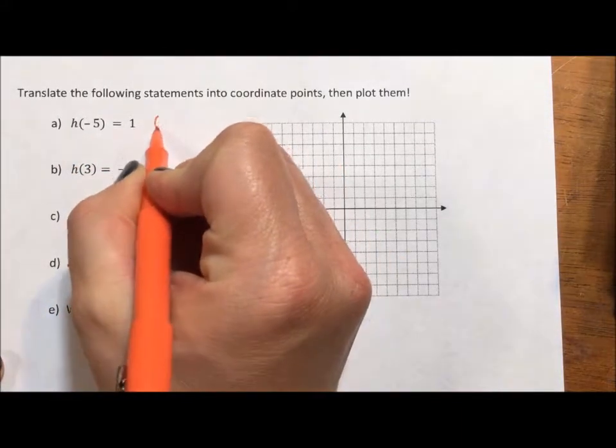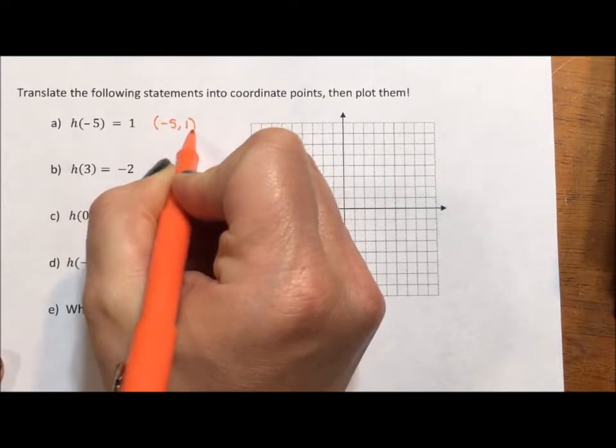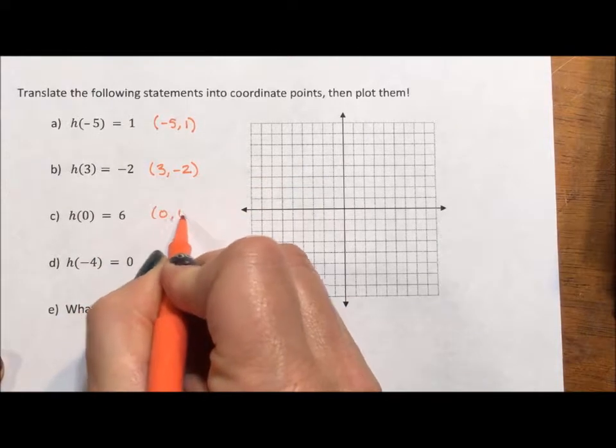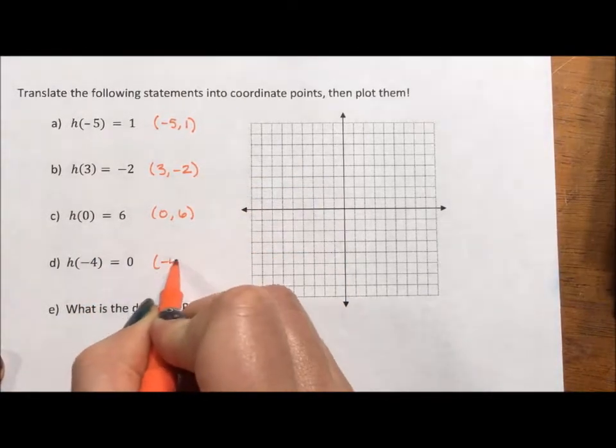So for this first one, the ordered pair is negative 5, 1. For the second one, it's just 3, negative 2, 0, 6, and negative 4, 0.